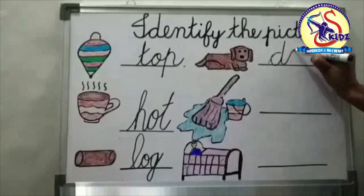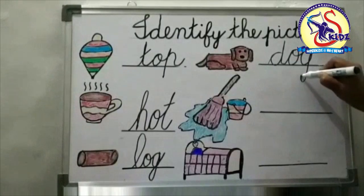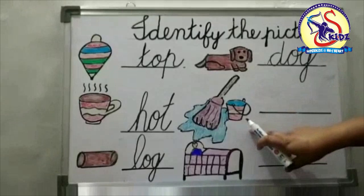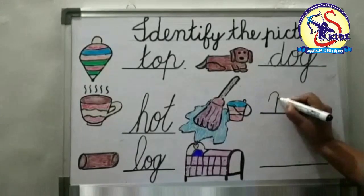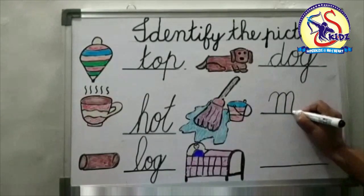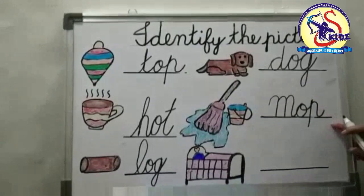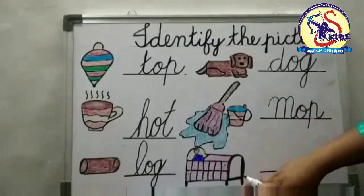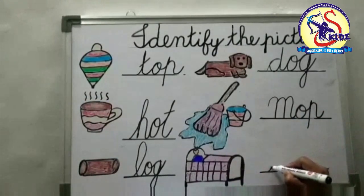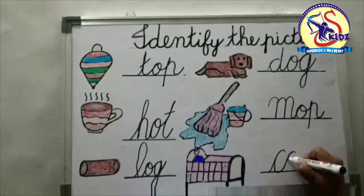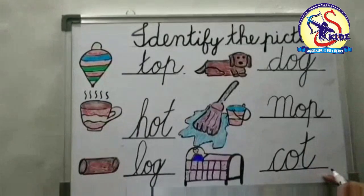Now see the next picture. What is this? This is a mop. M-O-P, mop. Now see the next picture. What is this? This is a cot. C-O-T, cot.